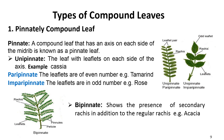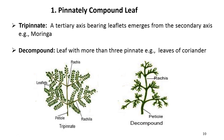The next type is bipinnate, where the main rachis gives rise to secondary axes, and the leaflets are borne on them, making the leaf twice pinnate — for example, acacia. Another type of pinnately compound leaf is tripinnate, where tertiary axes arise and leaflets emerge from the secondary axis, for example, moringa. In the case of a decompound leaf — where the leaf is more than thrice pinnate — it is called a decompound leaf, for example, the leaves of coriander.